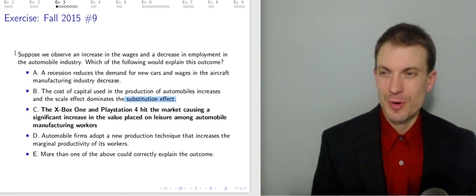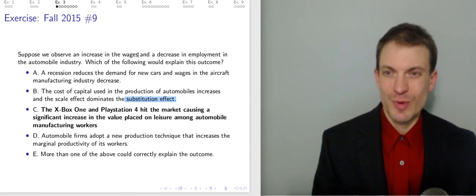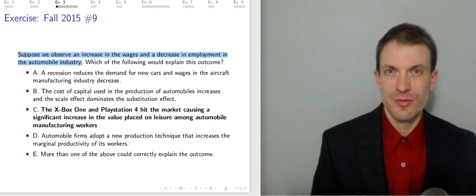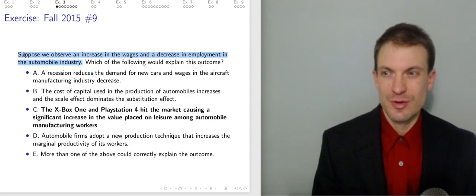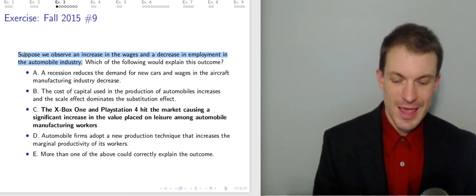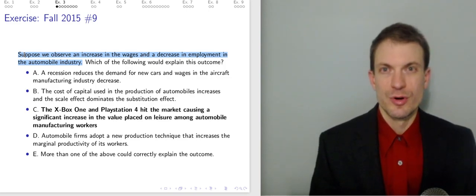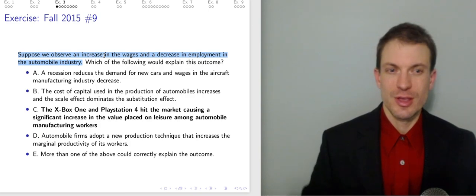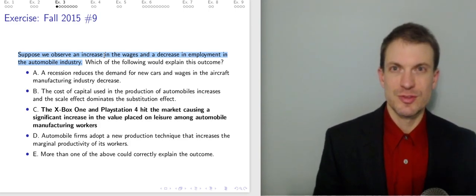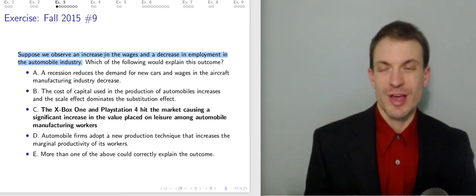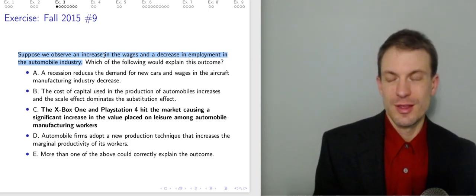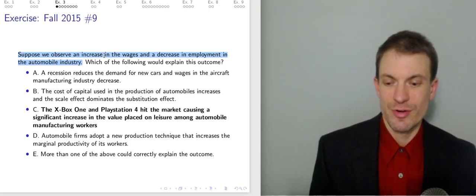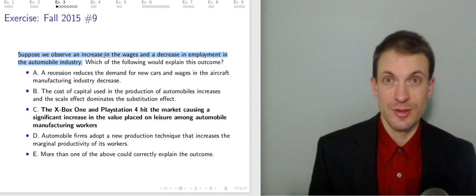Suppose we observe an increase in wages and a decrease in employment in the automobile industry. Which of the following could explain this outcome? If we have an increase in wages and a decrease in employment, we are going to need a leftward shift to the labor supply curve. Think about supply and demand — shift supply leftward, and that's going to give us a higher price and a lower quantity.